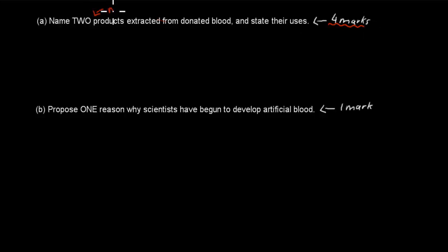So here we have our memory that comes into play. We just have to have in our memory two of these products extracted from blood. Now in this video, I'm going to talk about the red blood cells. So let's write RBC for red blood cells plus the white blood cells. These were two products extracted from donated blood. You could have also chosen platelets.